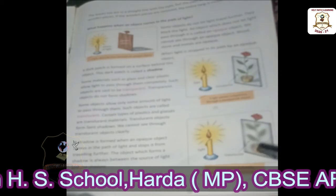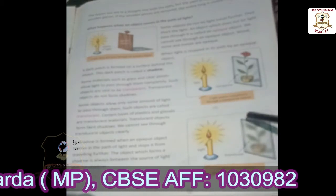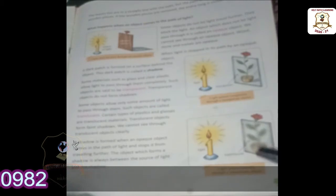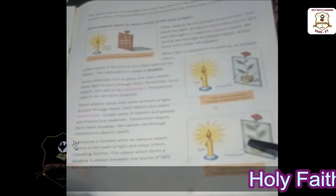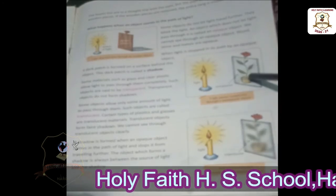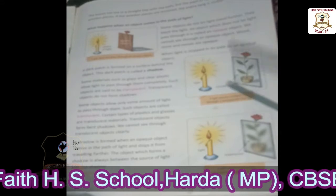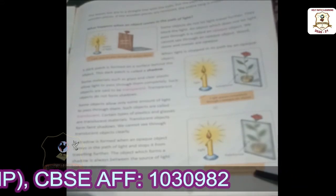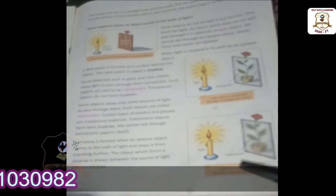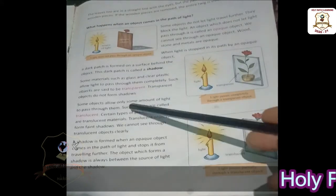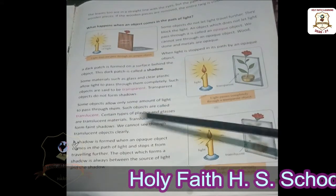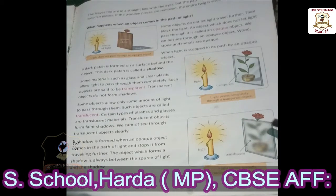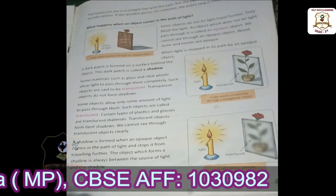Through this translucent glass we can see leaves and a flower vase, but it is not clear. To compare: through a transparent object, light passes completely. Through a translucent object, light passes only partially — only some amount of light passes through. That is why it has faint shadows.